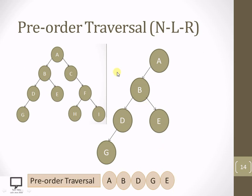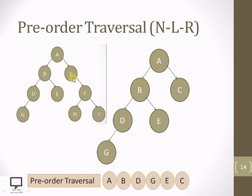E has no left child and no right child. Go backward to A — we have done with the left subtree of A. Now it is the turn for the right subtree of A. A has a right subtree: yes. Step down to right child C, make C root, and process it. C has no left subtree. C has a right child: yes. Step down to right child F, make F root, and process it. F has a left subtree: yes. Make H root and process it.